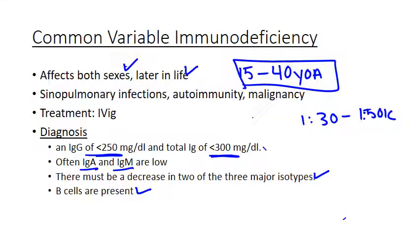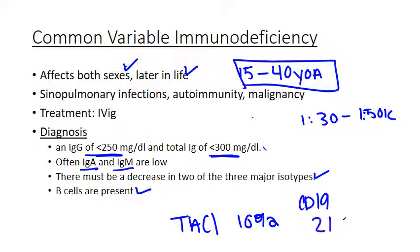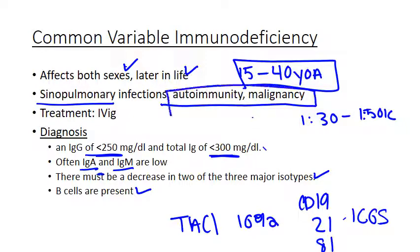We don't really know what causes CVID, but there's an association with certain mutations — TACI in close to 10% of patients — as well as mutations in genes including CD19, CD21, CD81, and ICOS, though these are all pretty rare. Clinically, patients present with the same sinopulmonary infections, plus an increased risk of autoimmunity and malignancy requiring follow-up. You can give IV-IG if they're having severe infections, and frequent monitoring for autoimmune disease and malignancy is recommended.